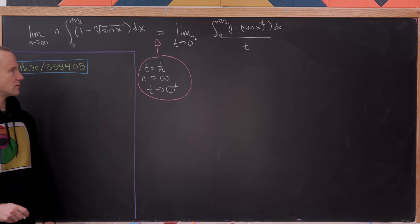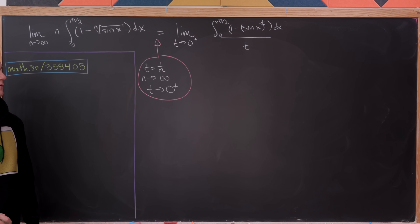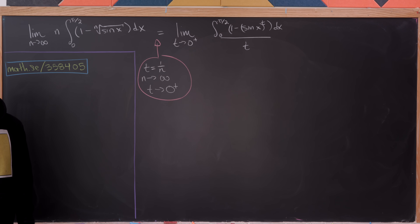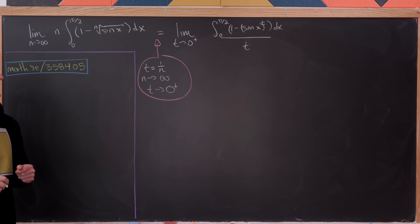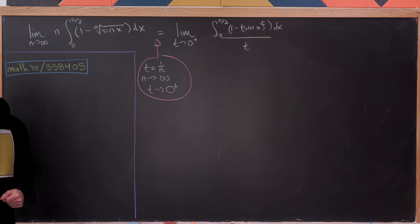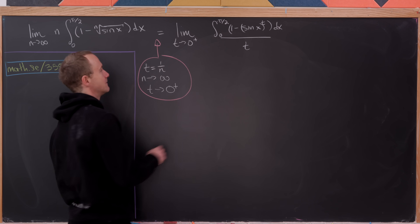Putting it like this, we in fact have an indeterminate form of type infinity over infinity, and we can use L'Hôpital's rule for that. We'll differentiate under the integral sign, which is okay here because everything is continuous and we have smooth partial derivatives.